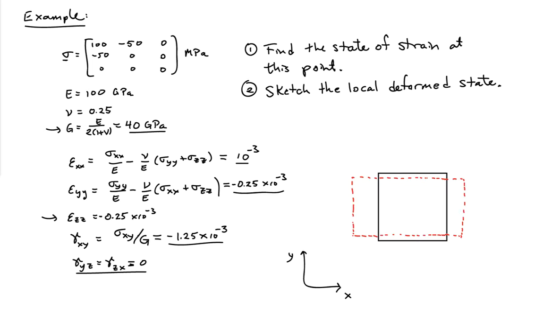Now I also have to take into account the fact that there is the shear strain, and the shear strain is negative. That means the 90 degree angle that exists originally in my system here is actually going to increase by 1.25 times 10 to the minus 3 radians.